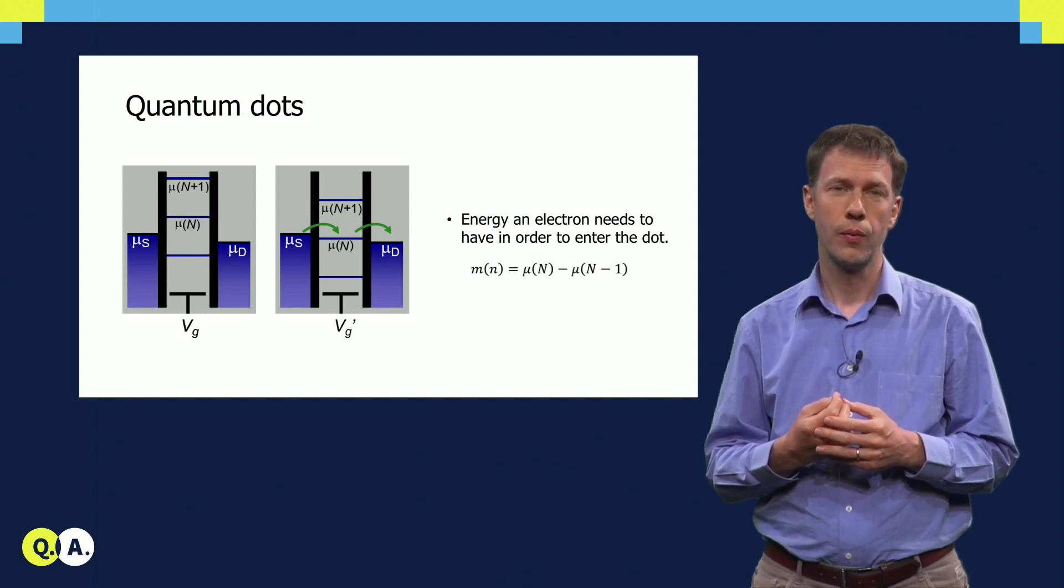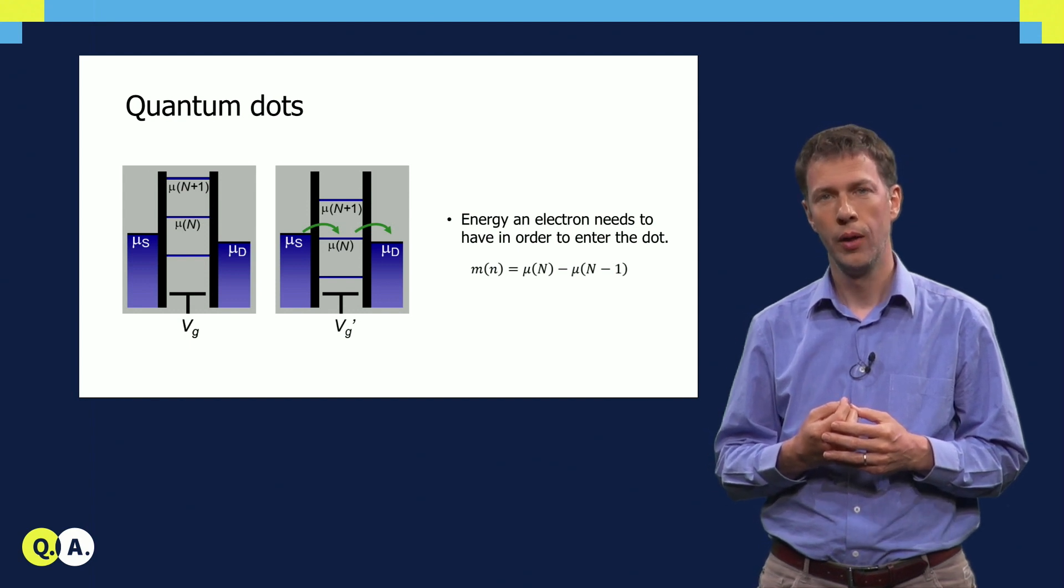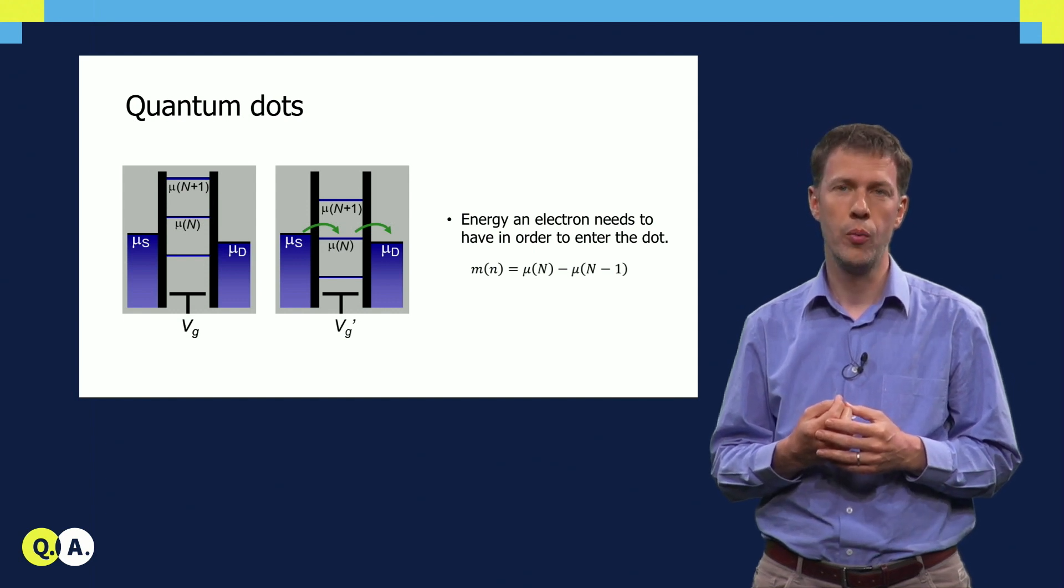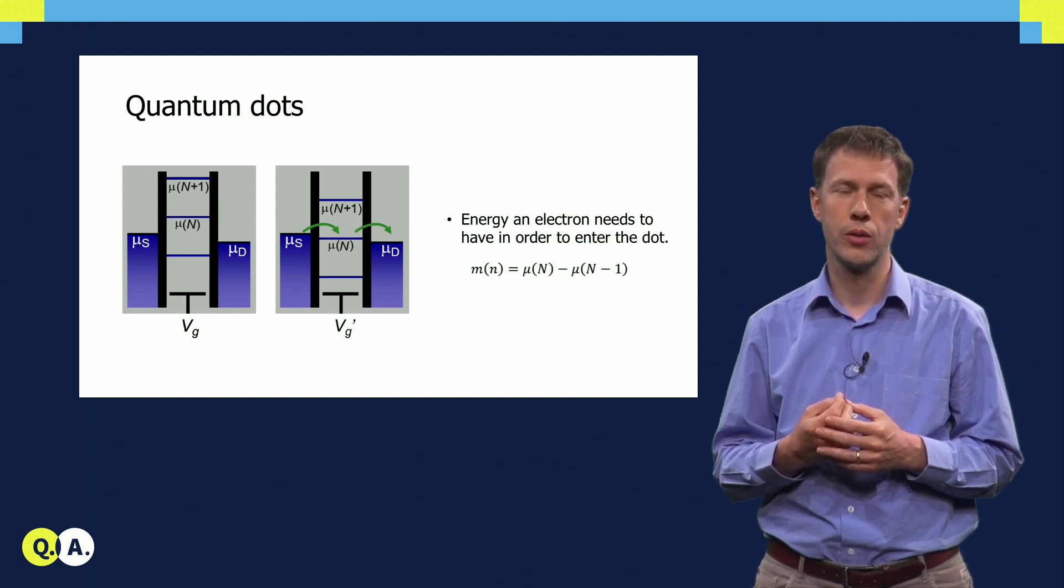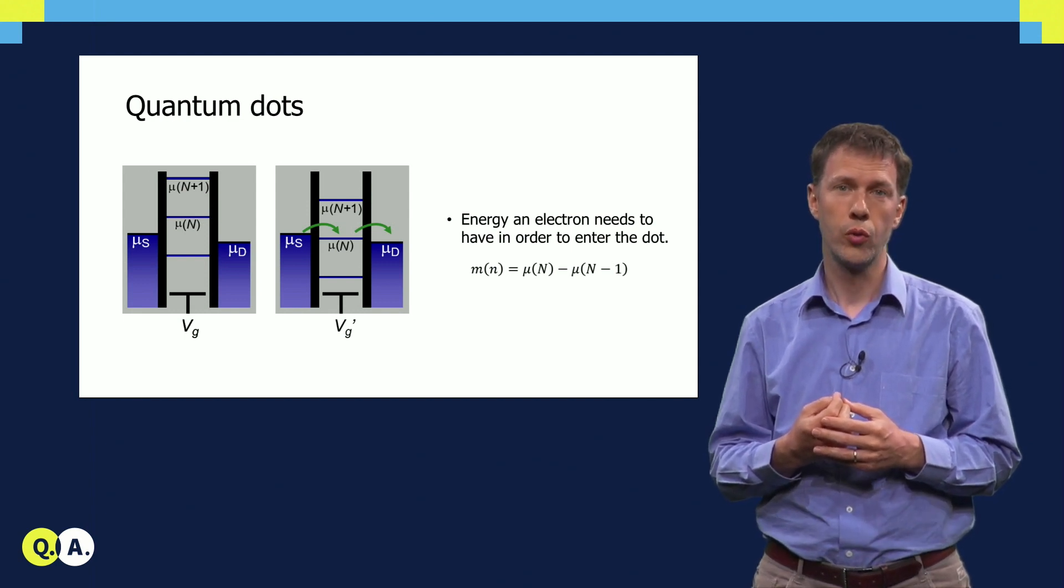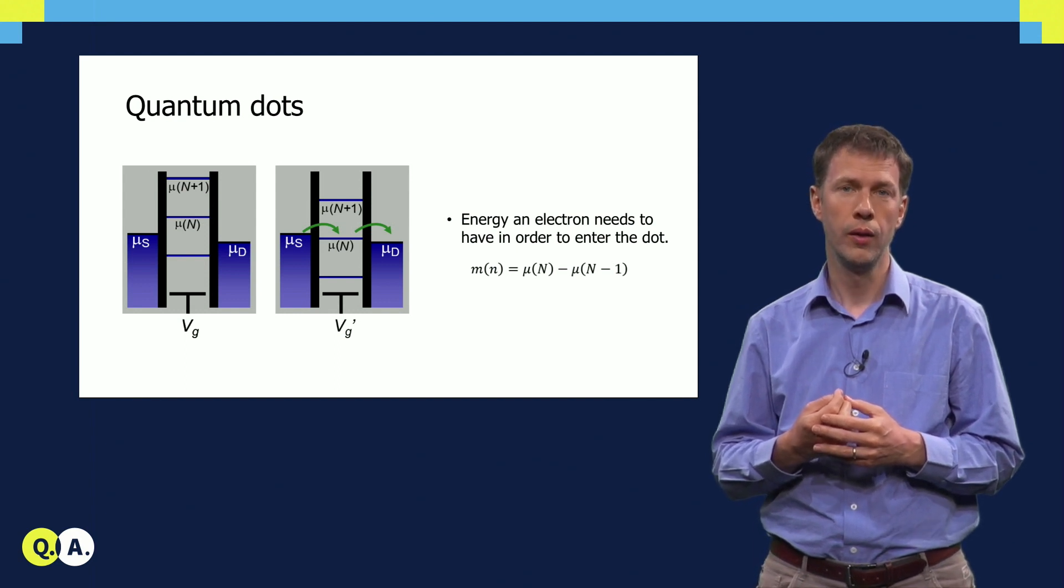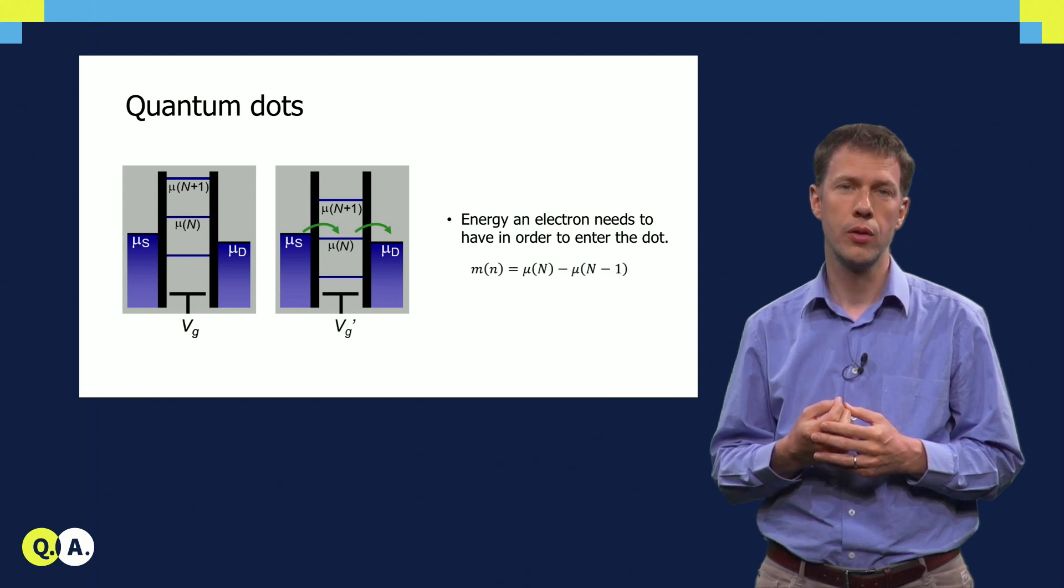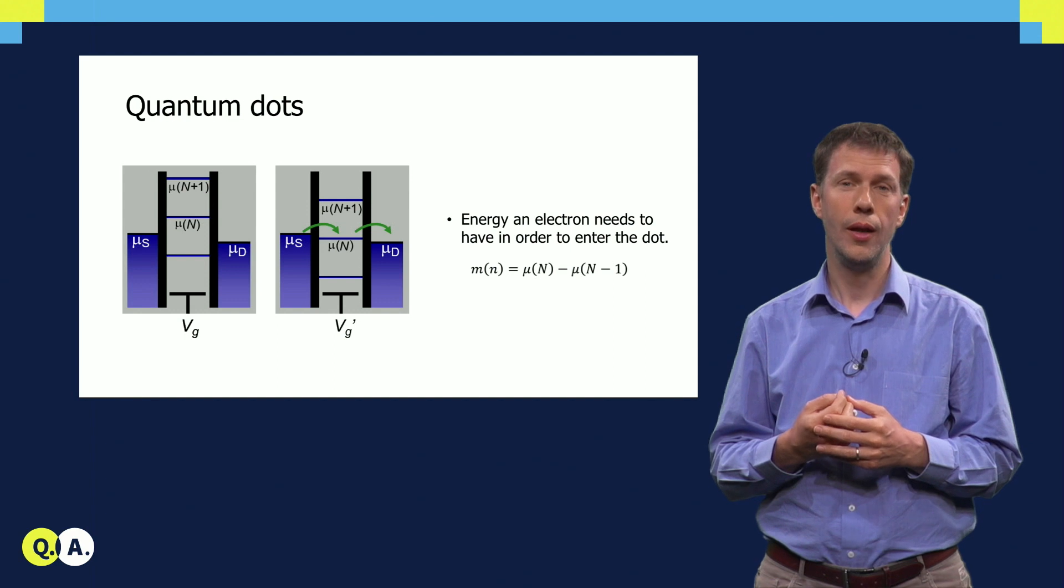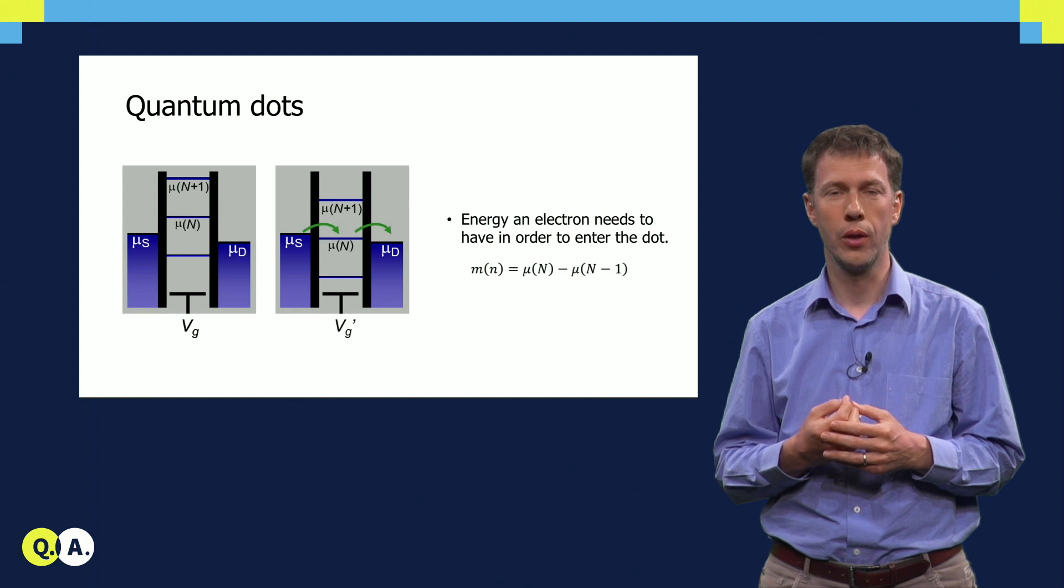In the configuration on the right, we have adjusted the gate voltages in such a way that the ladder comes down, and the electrochemical potential lies exactly within the window between the source and drain Fermi energies, or electrochemical potentials. In this condition, an electron can move from the source into the island, and then from the island it can move out to the drain. However, before the first electron leaves, no second electron can enter. So individual electrons are really being added one by one, as they pass through the quantum dot.